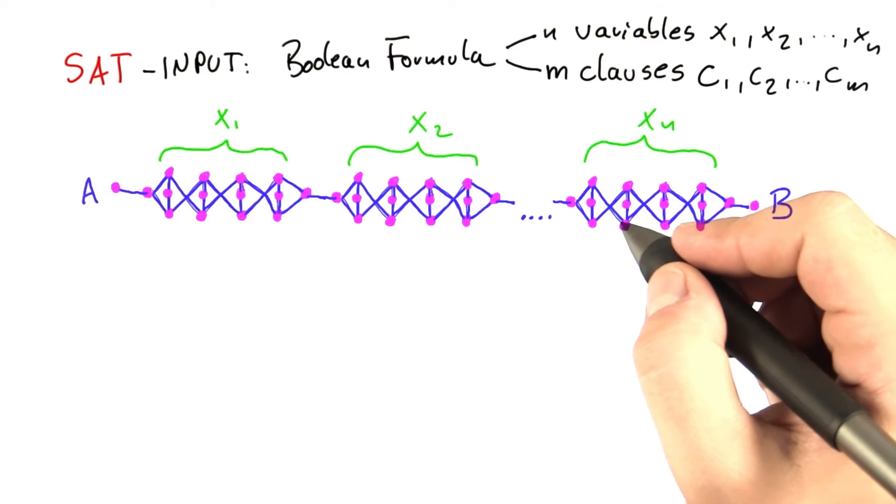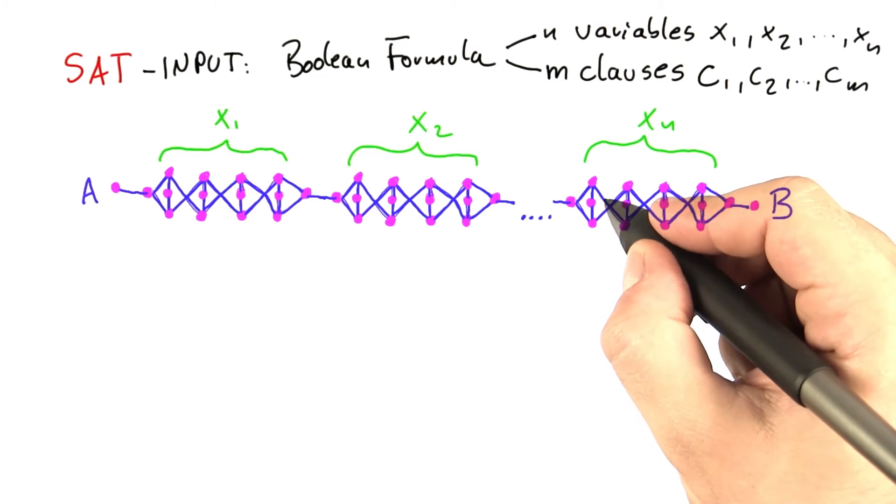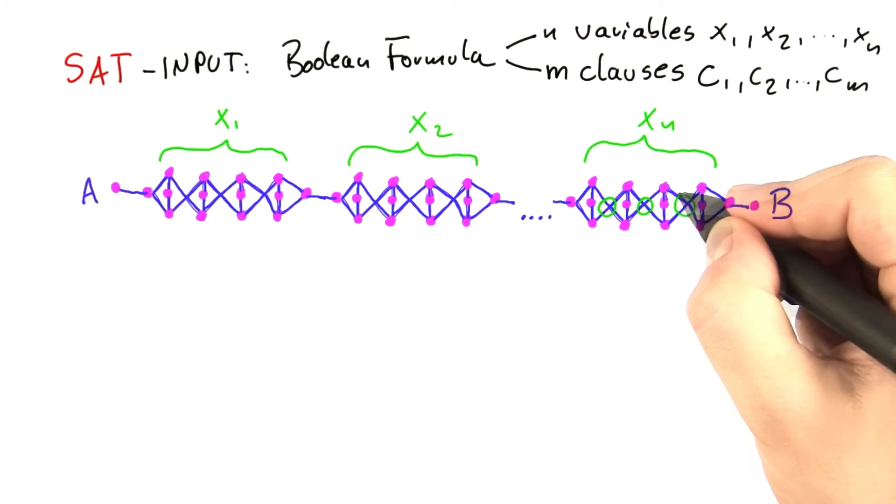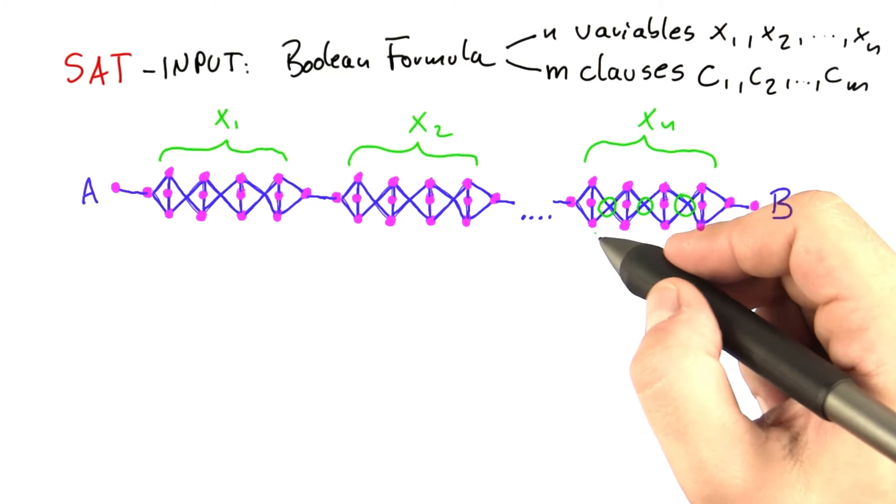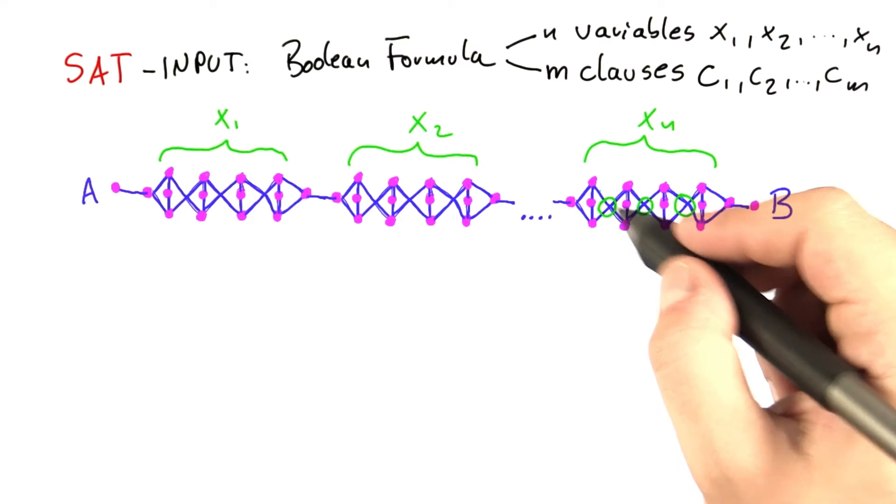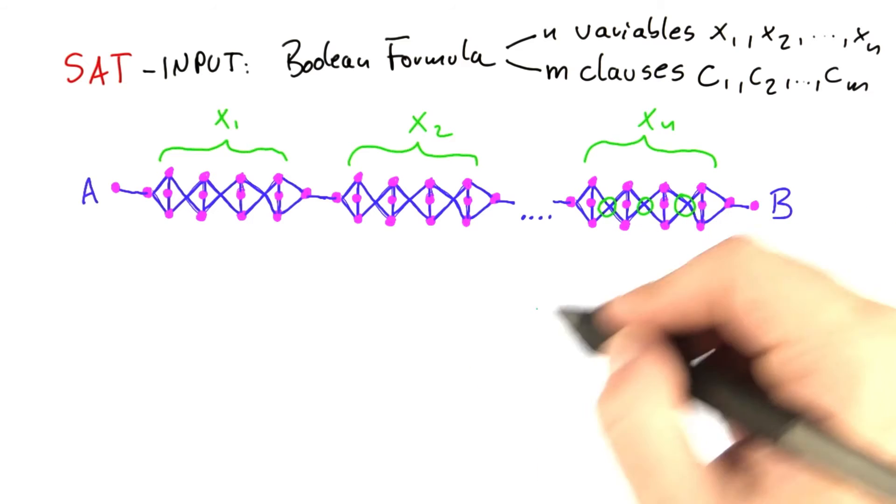In order to make this safe, we should construct this part so that we have m of these edge crossings here because then we know that for each clause we have an edge where we can attach that clause to.